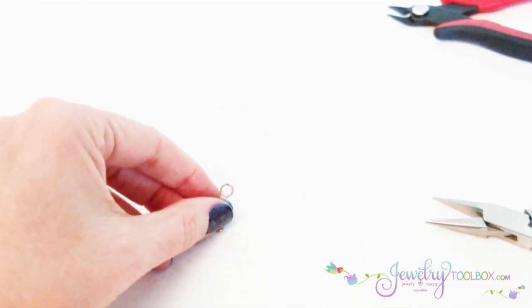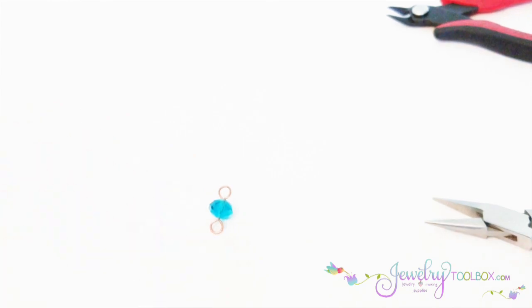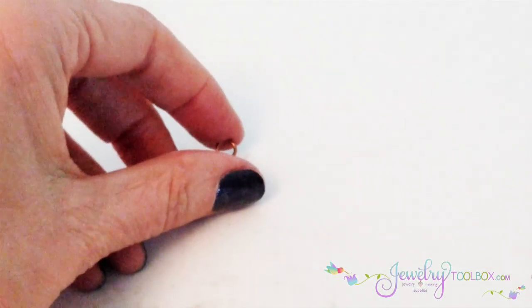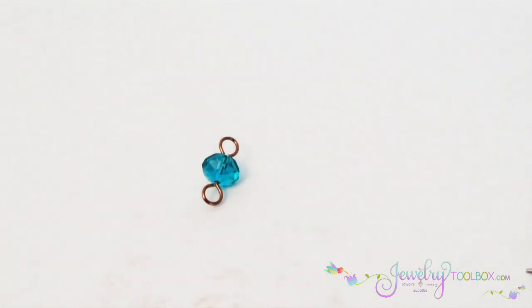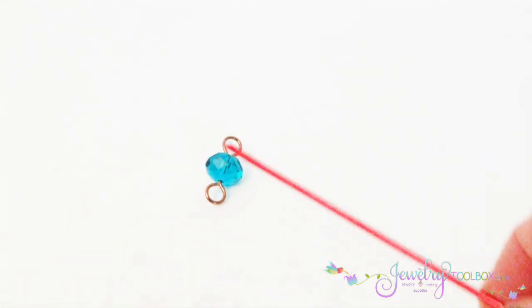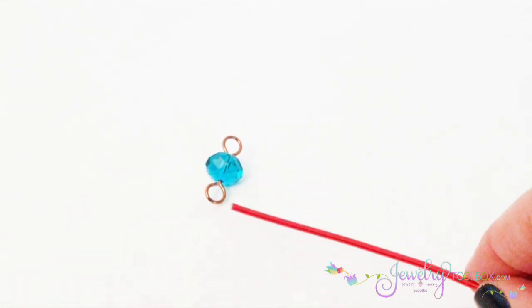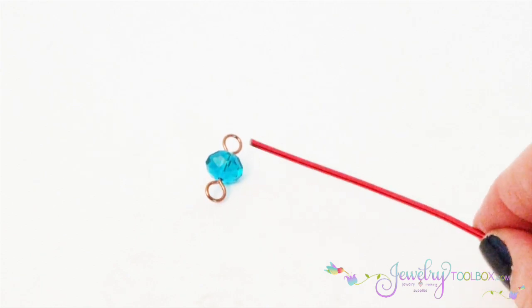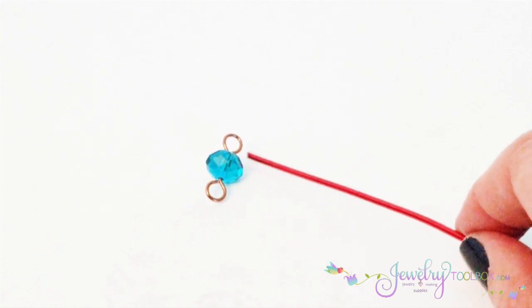The reason for that is we want to create something like this. Let me zoom in on that for you and brighten it up. We want to have a loop on either side of the bead. I've exaggerated it in this example just so you can see what's going on here.